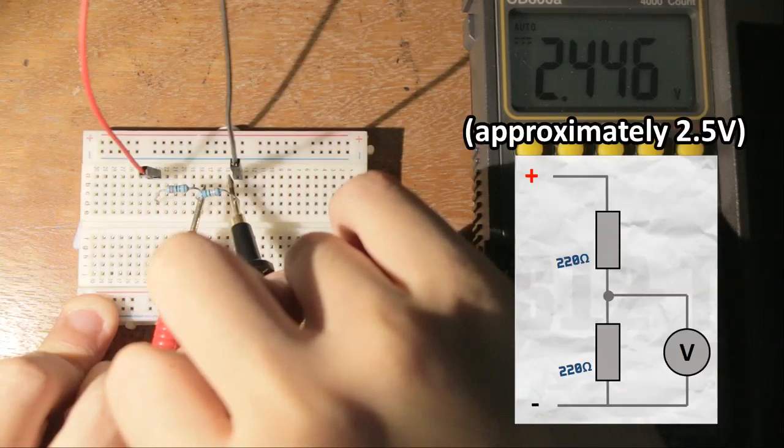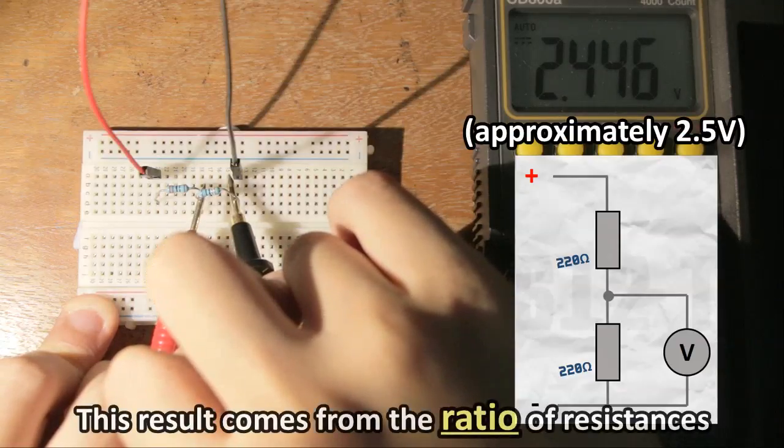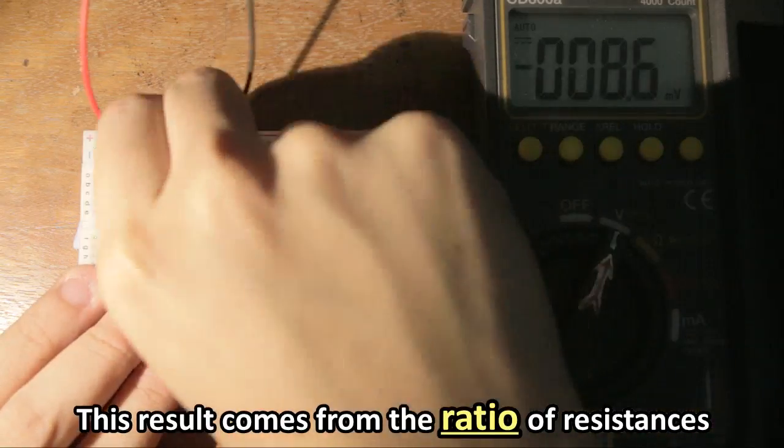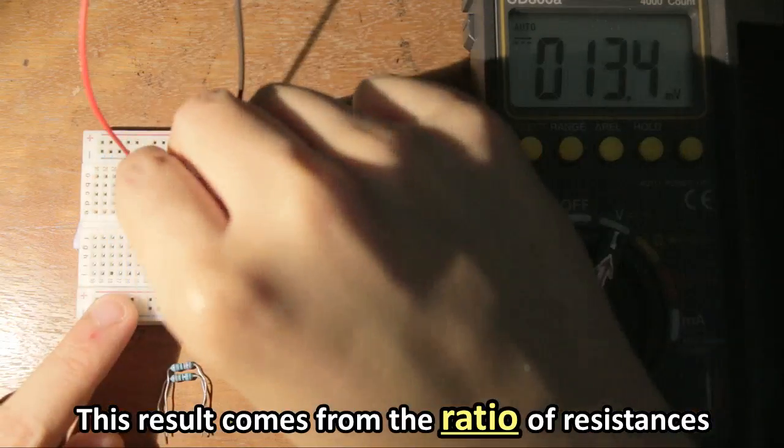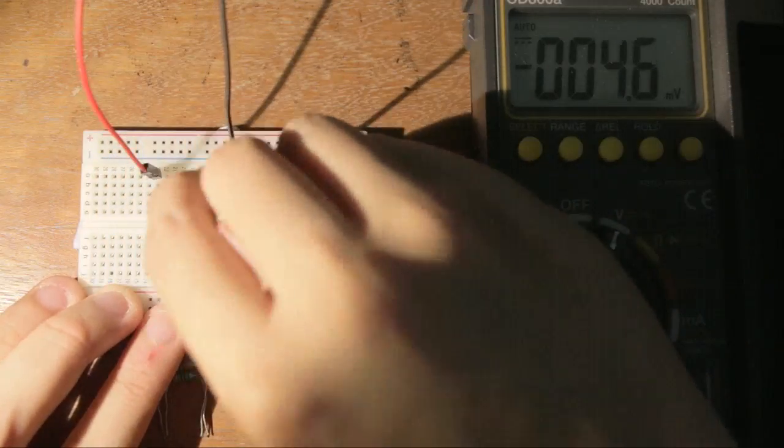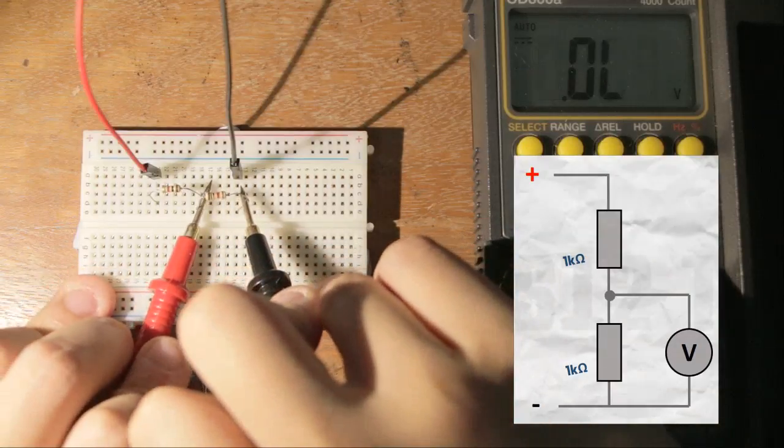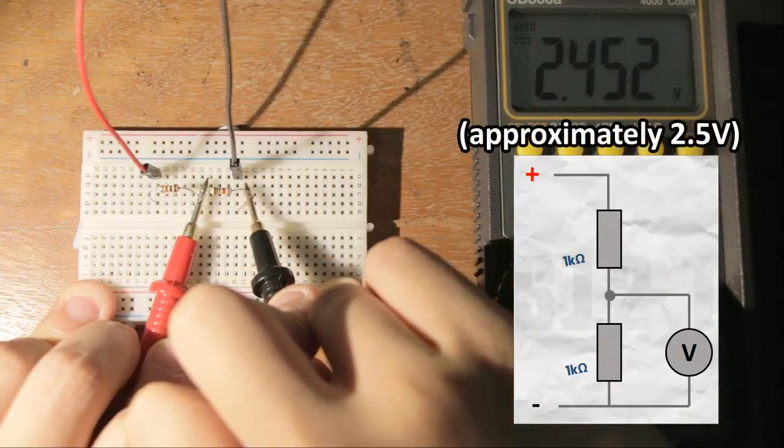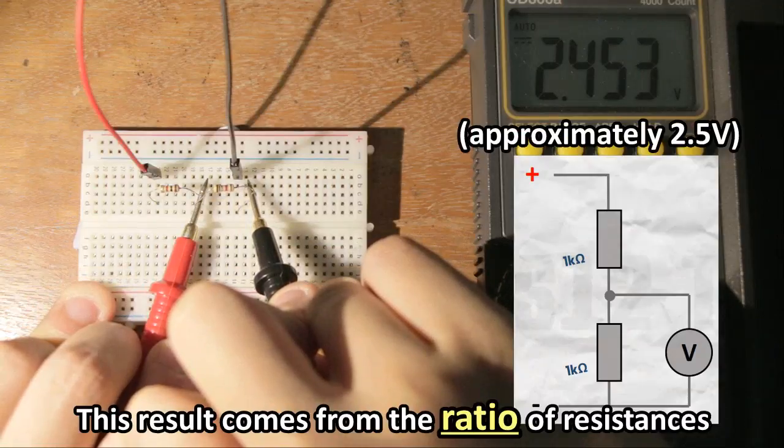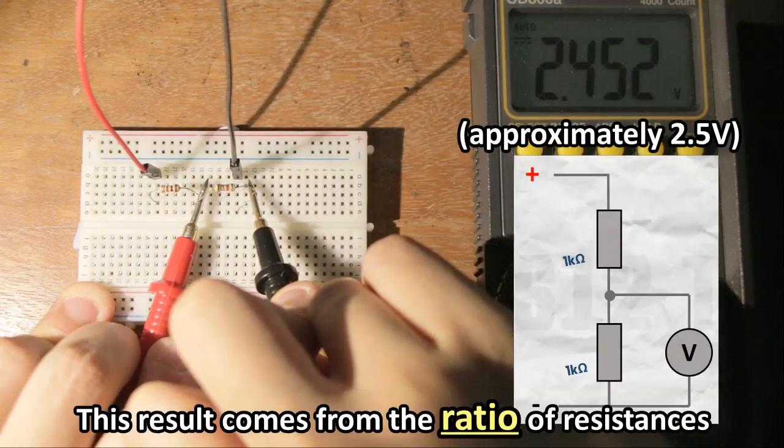How do we arrive at that value? Turns out, it is the ratio of resistances that create this effect. I'm currently using 220 ohm resistors. However, if we were to replace both resistors with 1K ohm resistors, the reading in the middle is still exactly the same. Again, this is because the voltage generated is a ratio of the two resistances.